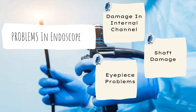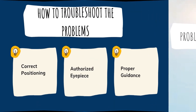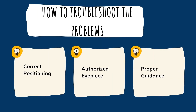Common problems in endoscopes — the left hand holds the control section while the right hand controls the insertion tip. Be aware of bending the upper end of the umbilical cord, as changes during bending can damage internal channels. The most proximal portion of the endoscope is the eyepiece. Generic replacement eyepieces repaired by unauthorized firms using low-quality materials can cause an undesirable view during examination. The shaft containing illumination components may also get damaged. To troubleshoot: correct positioning ensures safe operation, use high-quality authorized eyepieces fitted to manufacturer specifications, and always use endoscopes with proper guidance.